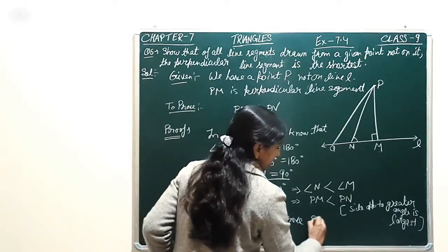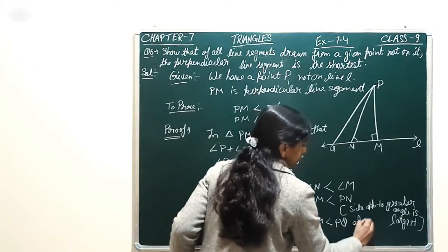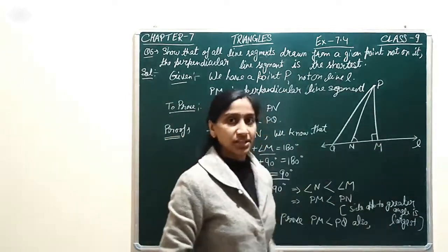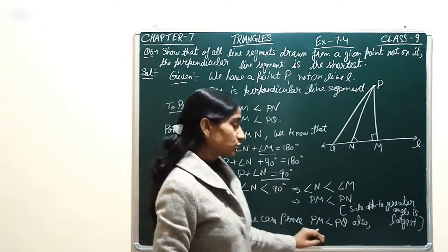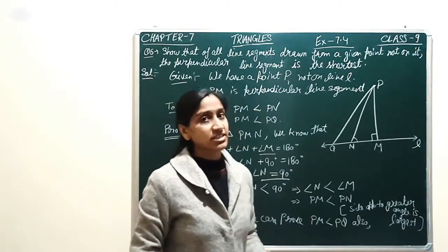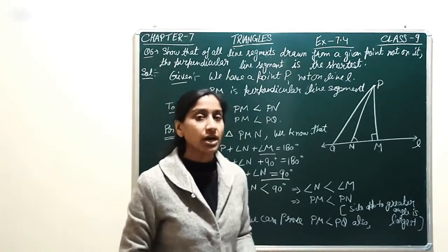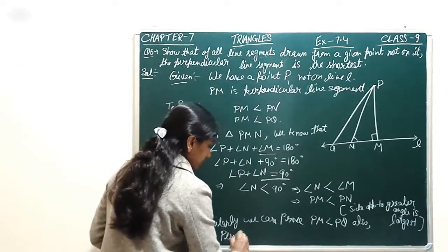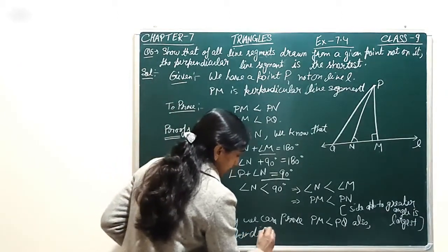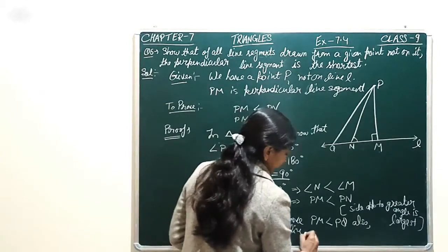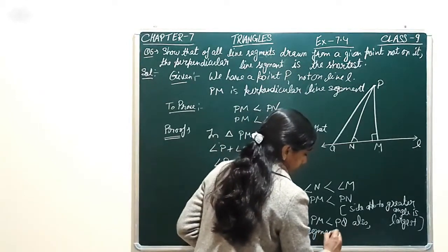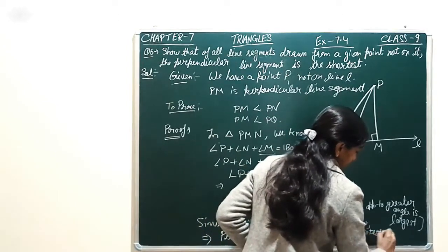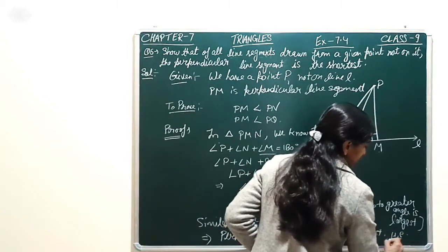Similarly, PM is less than PN, and PM is less than PQ also. So, in this way we can see that if we draw any line segment here, PM is the smallest among all of them. That means the perpendicular line segment — the one that is perpendicular — is the shortest. So it is proved: the perpendicular line segment is the shortest. This is what we had to prove.